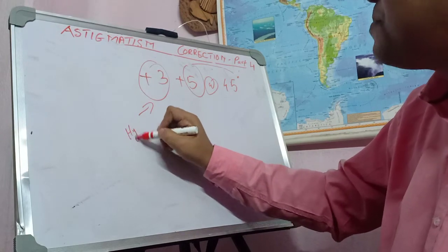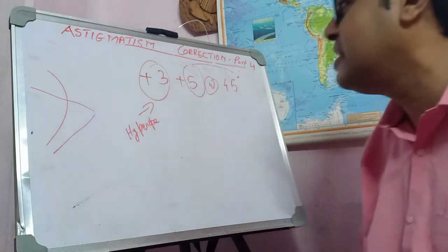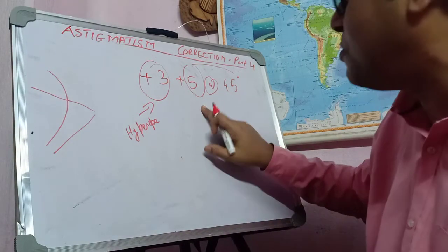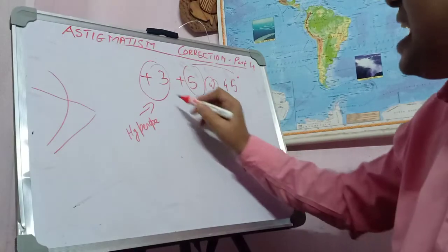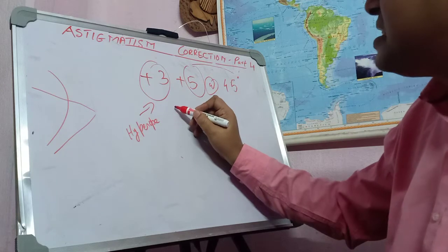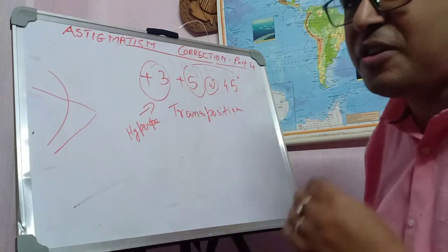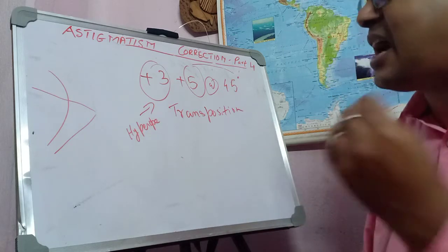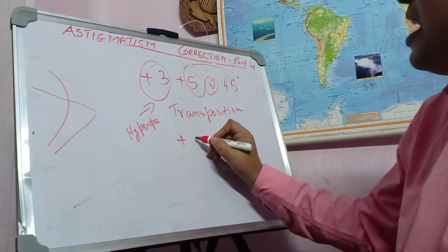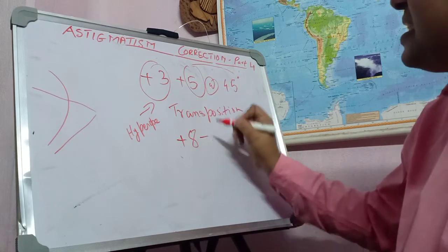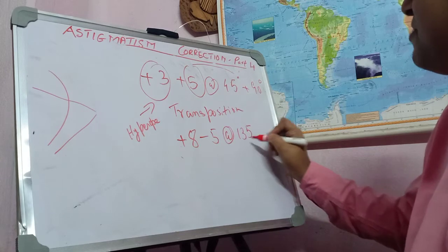The sphere power is plus 3, which goes to 45 degrees. You do a transposition first. In the transposition, you add the sphere and cylinder: plus 3 and plus 5 gives plus 8. Then you change the cylinder sign to minus 5, the cylinder power remains the same, and you change the axis by 90 degrees — so 45 degrees becomes 135 degrees. The transposed prescription is plus 8 minus 5 at 135 degrees.